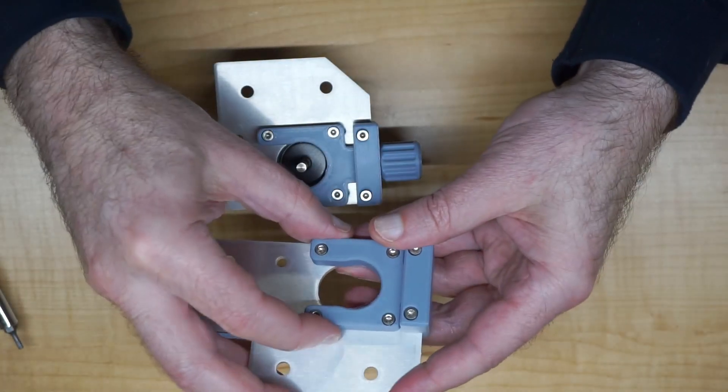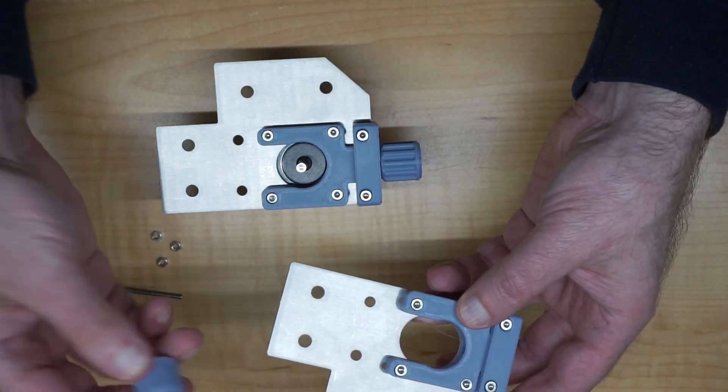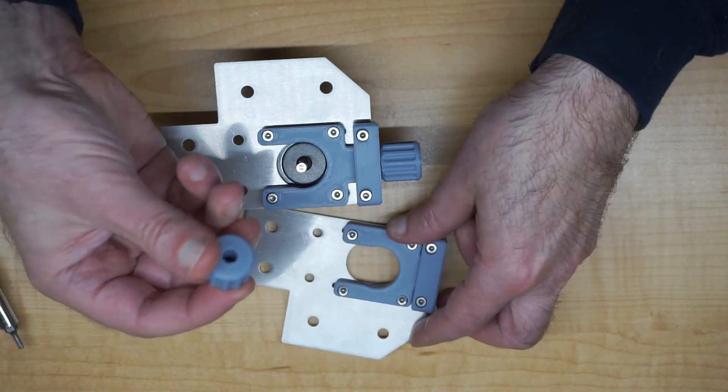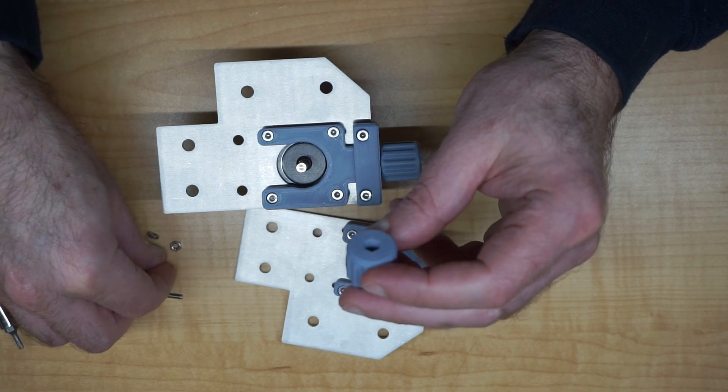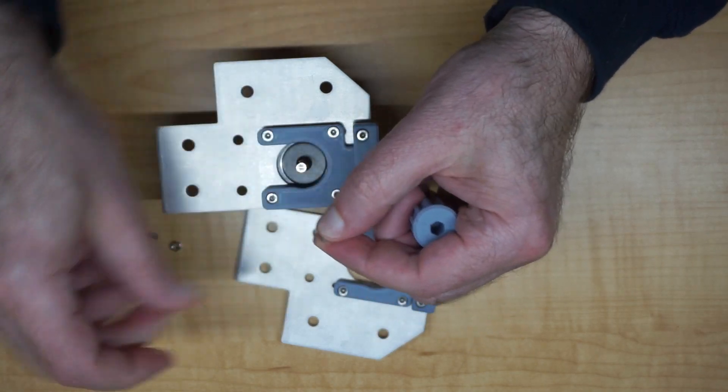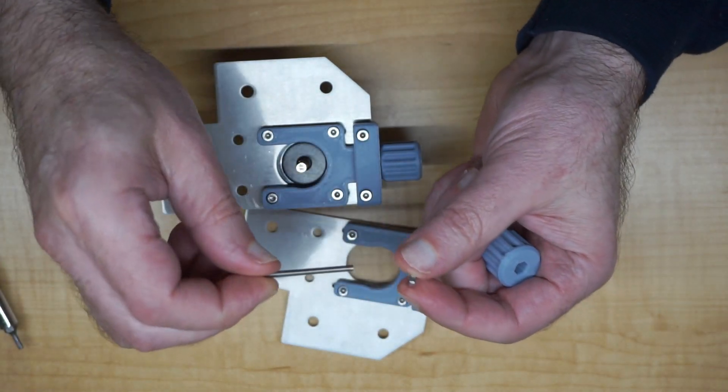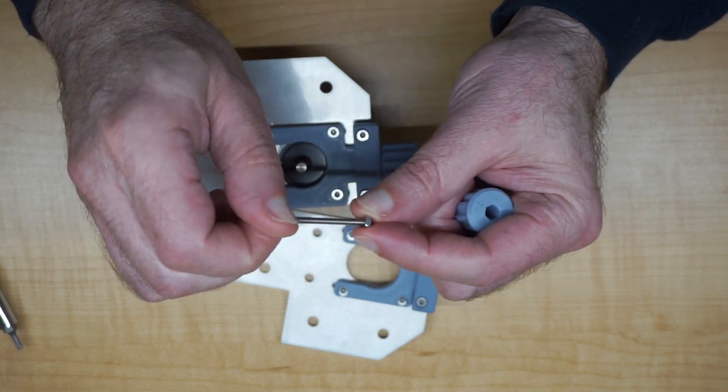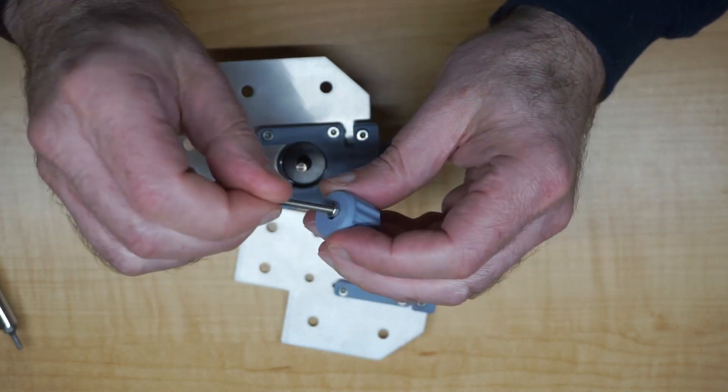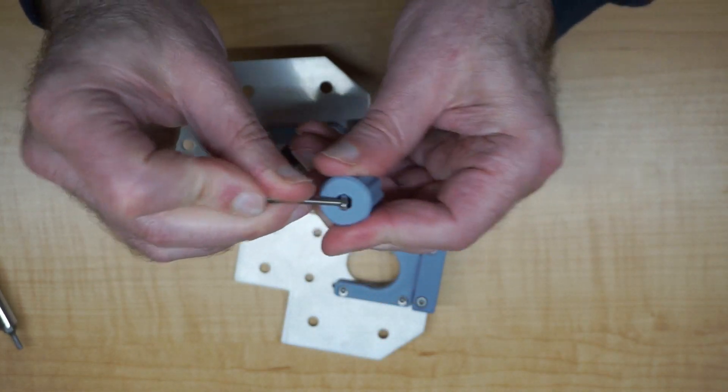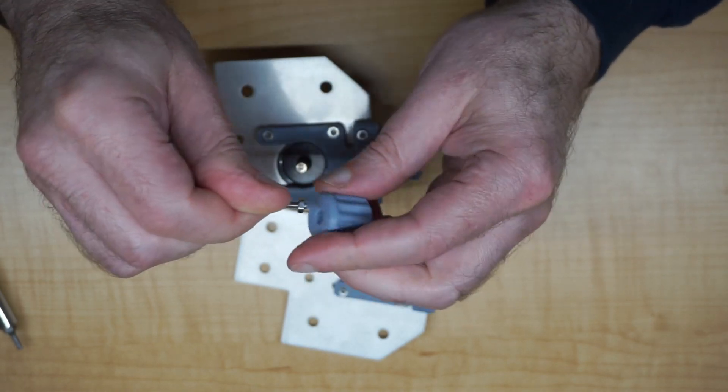For the tension knob, there's another spot for a capture nut right in the top. This is a 30 or 35 millimeter M3, so I'll just stick that in there.